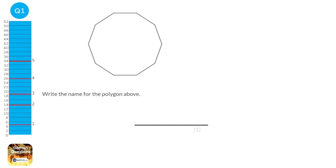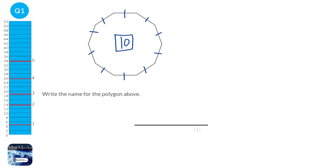With this question, we need to first count how many sides this polygon has. So it's going to be 1, 2, 3, 4, 5, 6, 7, 8, 9, 10 — so it's 10 sides. We just need to know that a 10-sided shape is a decagon. We are expected to know all the names of shapes between 3 and 10 sides, so if you don't know them already, just sit down and learn them.